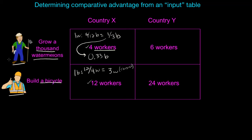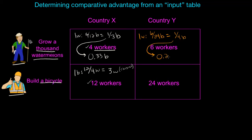Let's do a similar method to calculate the opportunity cost of watermelons and bicycles in Country Y. The six workers needed to produce one thousand watermelons — how many bicycles could they have produced? Well, they would have needed twenty-four workers to produce a single bicycle. Therefore in Country Y, six over twenty-four bicycles are given up in order to produce one thousand watermelons. That is one-fourth bicycle per watermelon, or converting to a decimal, 0.25 bicycles per watermelon.